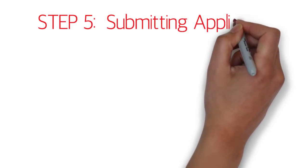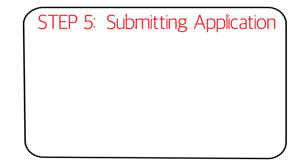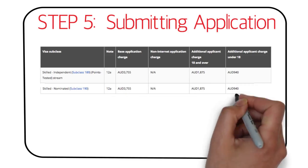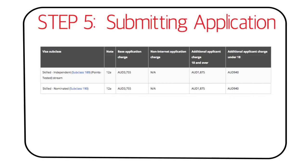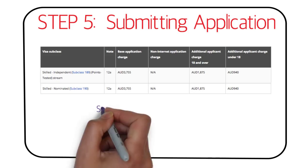Step five is submitting the application, and this is where you pay the maximum amount — the actual visa fee. The visa fee is more or less the same for all subclasses: subclass 189, 190, and 489 (the provisional visa). It is AUD $3,755 for the primary applicant, AUD $1,875 for the spouse, and around AUD $940 for children under 18 years of age.